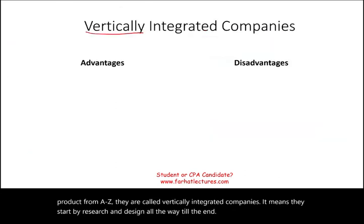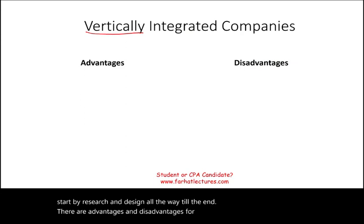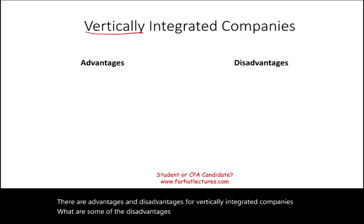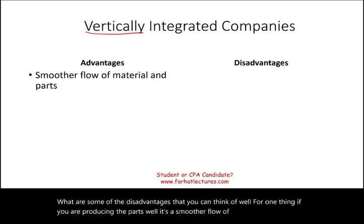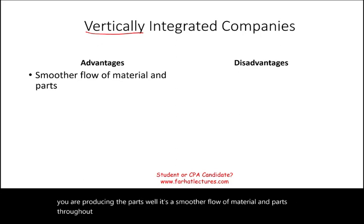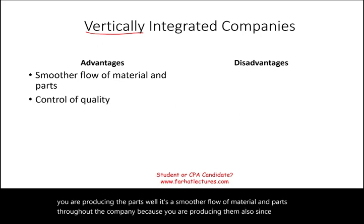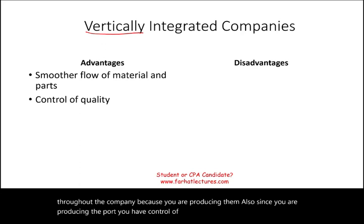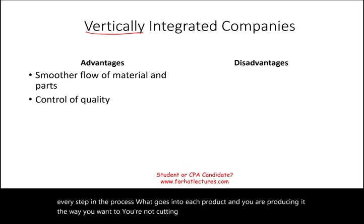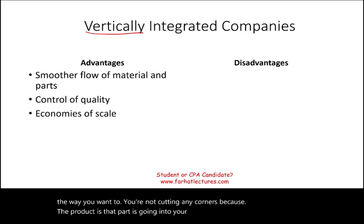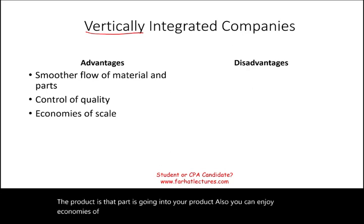There are advantages and disadvantages for vertically integrated companies. One advantage is a smoother flow of material and parts throughout the company since you are producing them yourself. Also, since you are producing the part, you have control of quality — you control every step in the process. You're not cutting any corners because the part is going into your own product. You can also enjoy economies of scale: if you produce a lot, cost will go down.